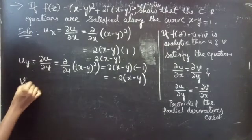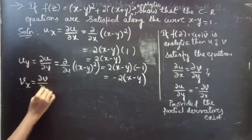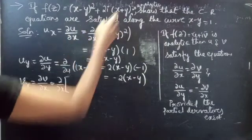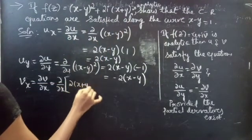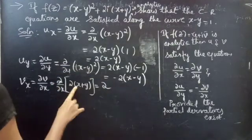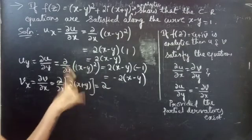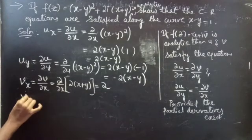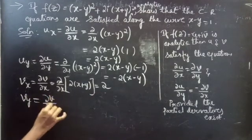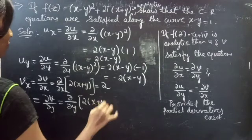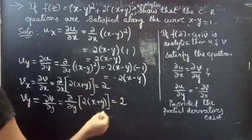Now we find vx = ∂v/∂x. Differentiating 2(x + y) with respect to x gives vx = 2. Likewise, vy = ∂v/∂y of 2(x + y) = 2.